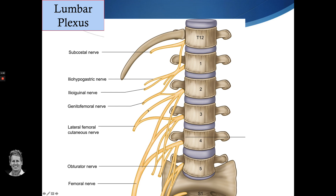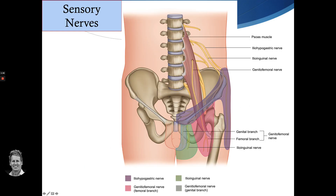Moving on to the next page, we can see the sensory nerves and the area of color around the anterior groin area.